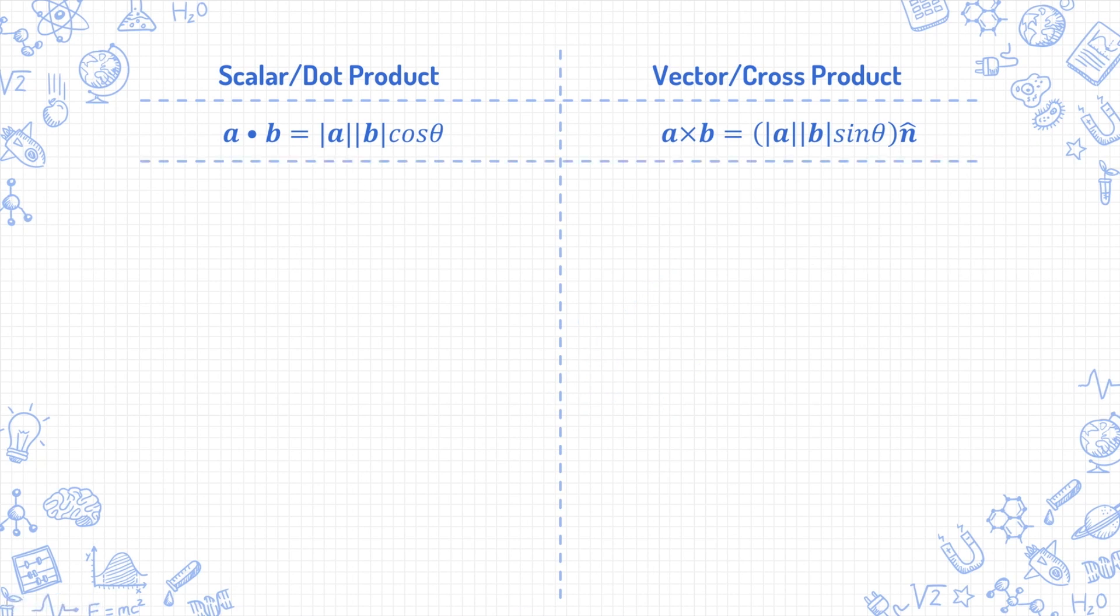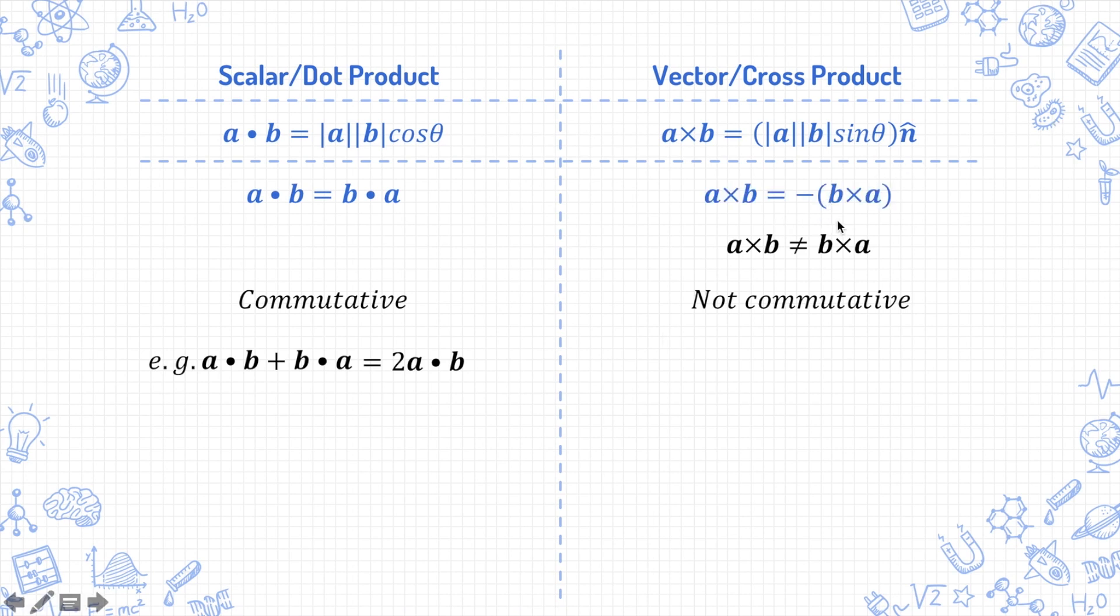Now let's go through the properties of the dot product and cross product. The dot product is commutative, which means that a dot b equals b dot a. So, for example, if we have a dot b plus b dot a, it is equal to 2a dot b. However, the cross product is not commutative. a cross b does not equal b cross a. Instead, a cross b equals negative of b cross a. So, for example, if I have a cross b minus b cross a, it is not equal to the 0 vector. Instead, it is equal to a cross b plus a cross b, which is then equal to 2 times a cross b.